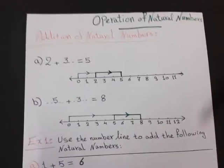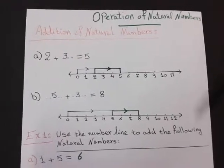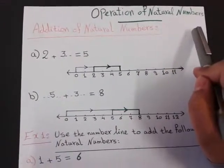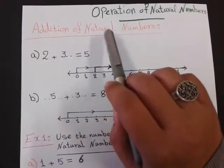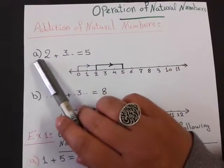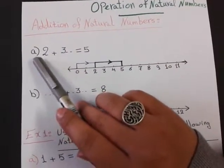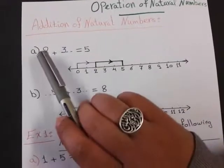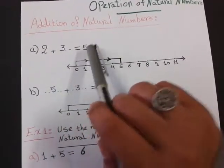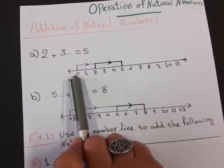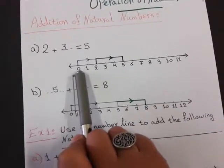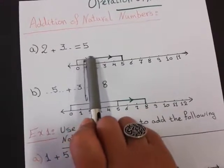Good morning, my students. Today we will explain the operation of natural numbers. The first operation we have is addition of natural numbers. For the first example, I want to know from the number line: two plus what equals five? First of all, I will start counting from number zero, moving to the right hand side.